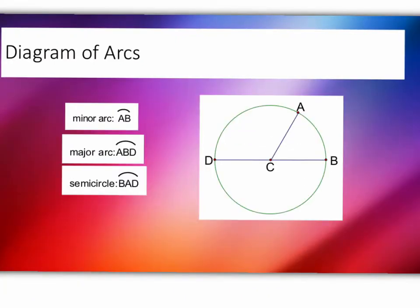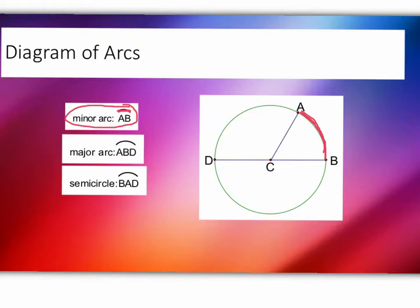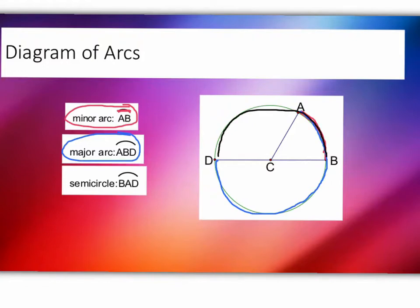Here's a diagram of arcs. A minor arc would be arc AB — notice the little arc symbol up top, and it only uses two letters. I go from A to B, and that's the minor arc, less than 180 degrees. For the major arc, we use three letters — A, B, and all the way to D — so the blue is the major arc. The red is the minor arc. And the semicircle is B, A, D — all the way over here. Notice how I use color coding to help with the diagram; I would recommend you do the same in your notes.